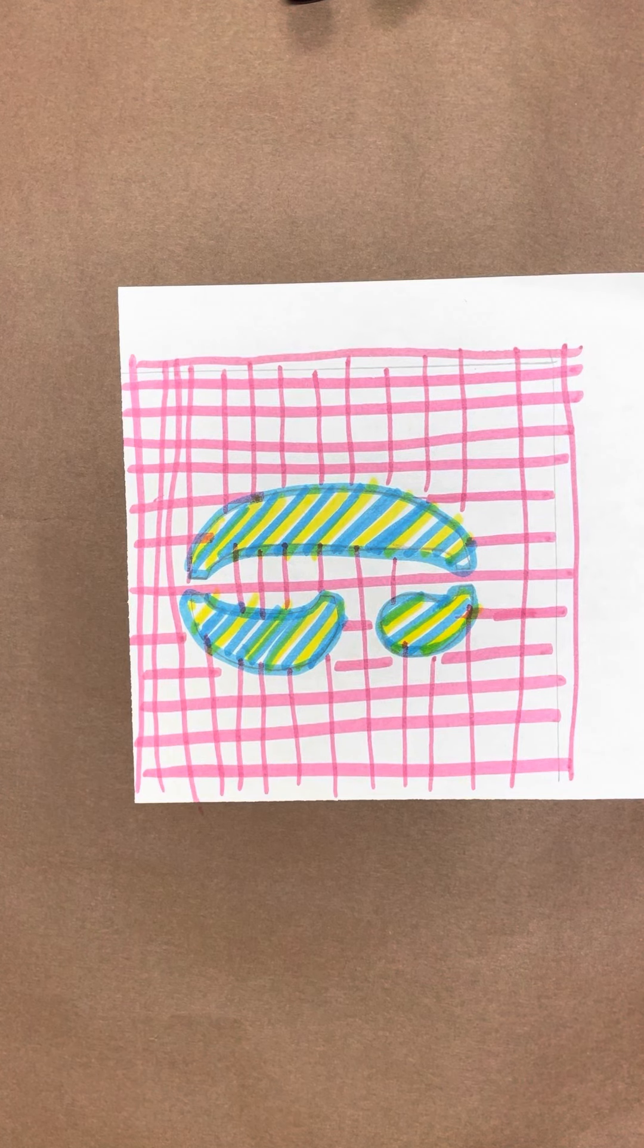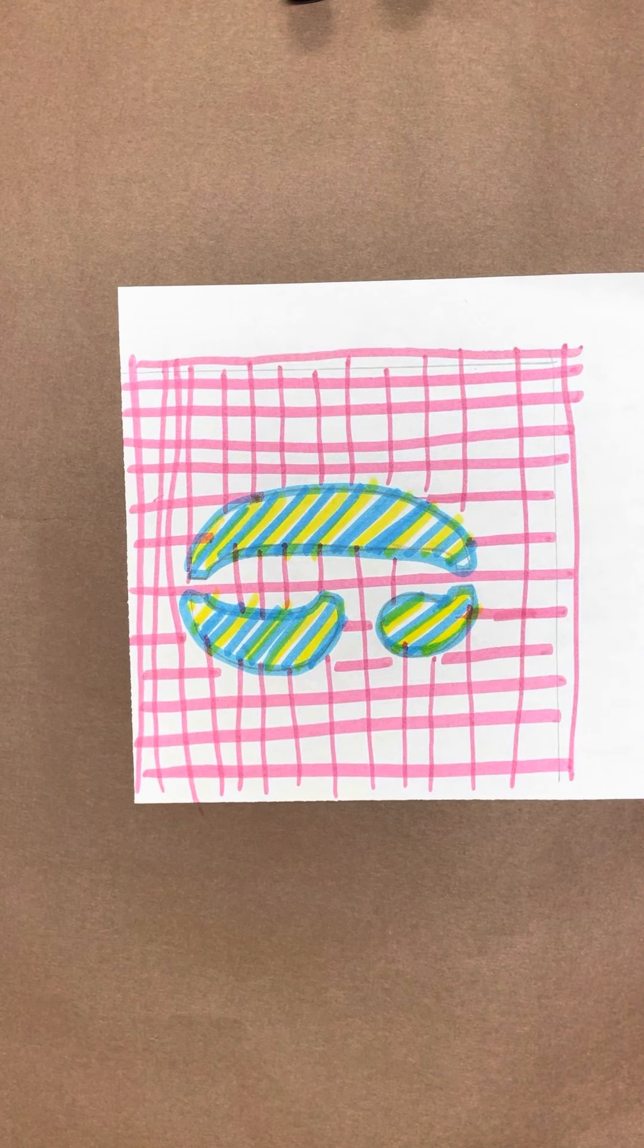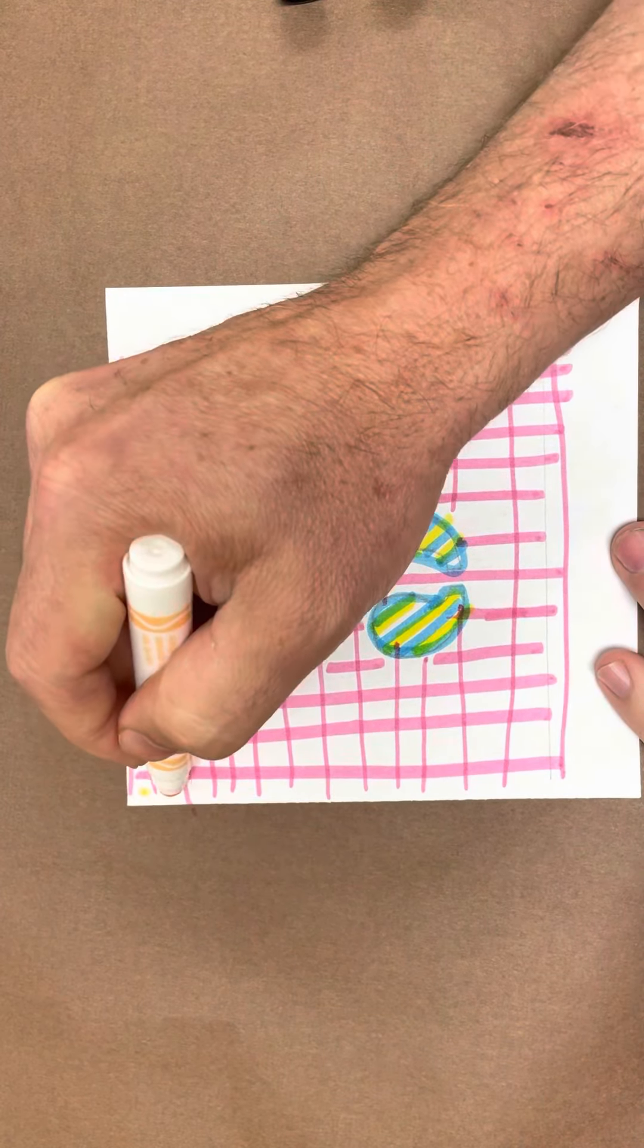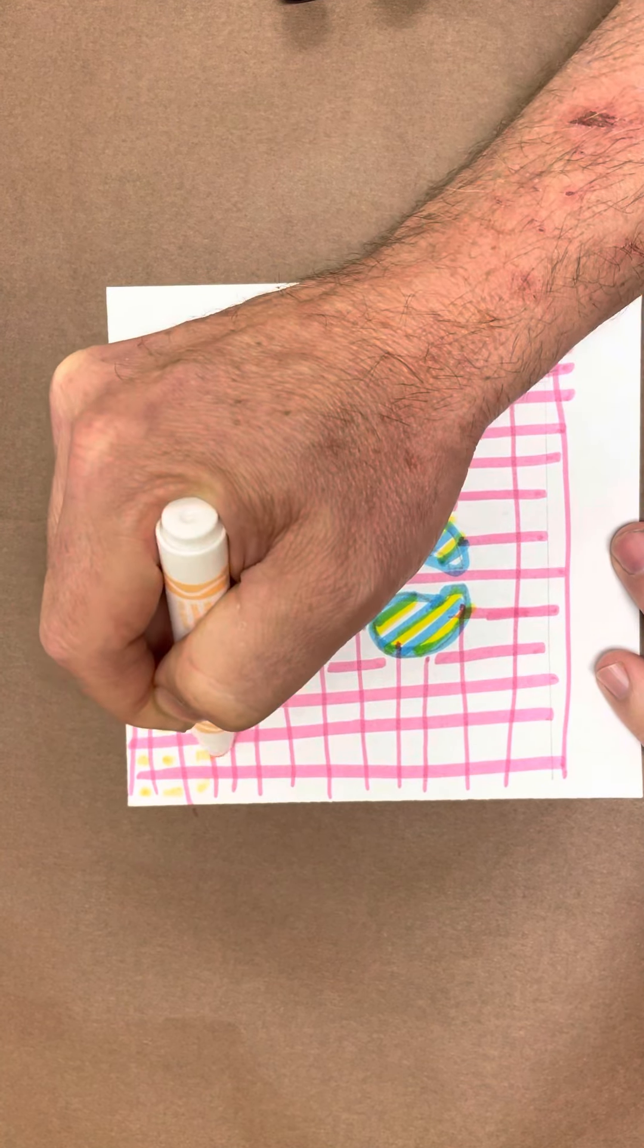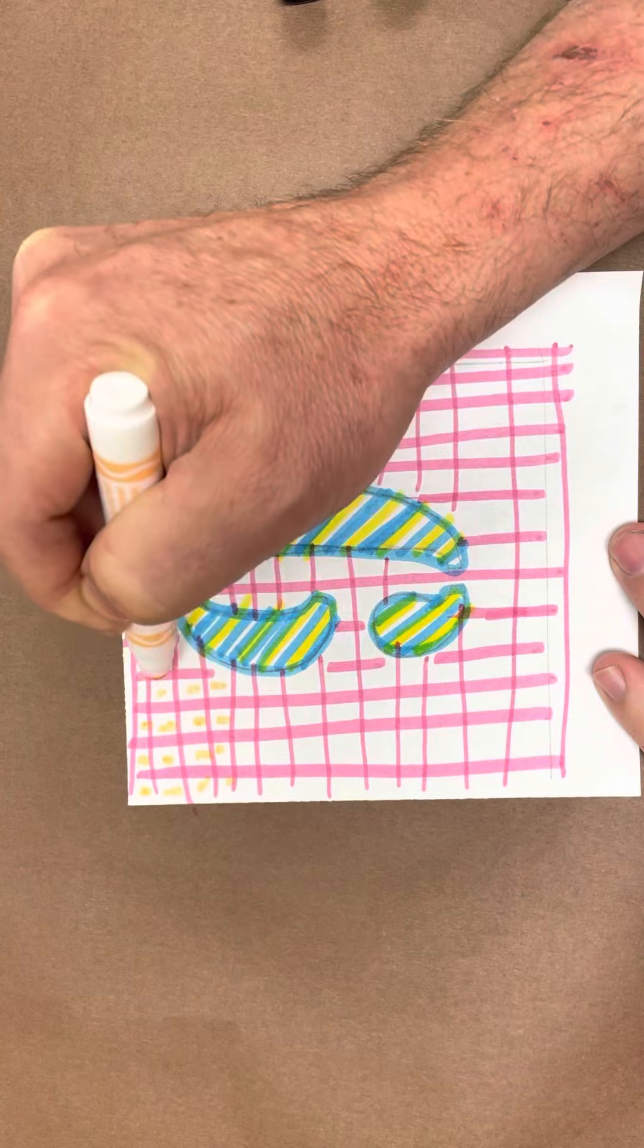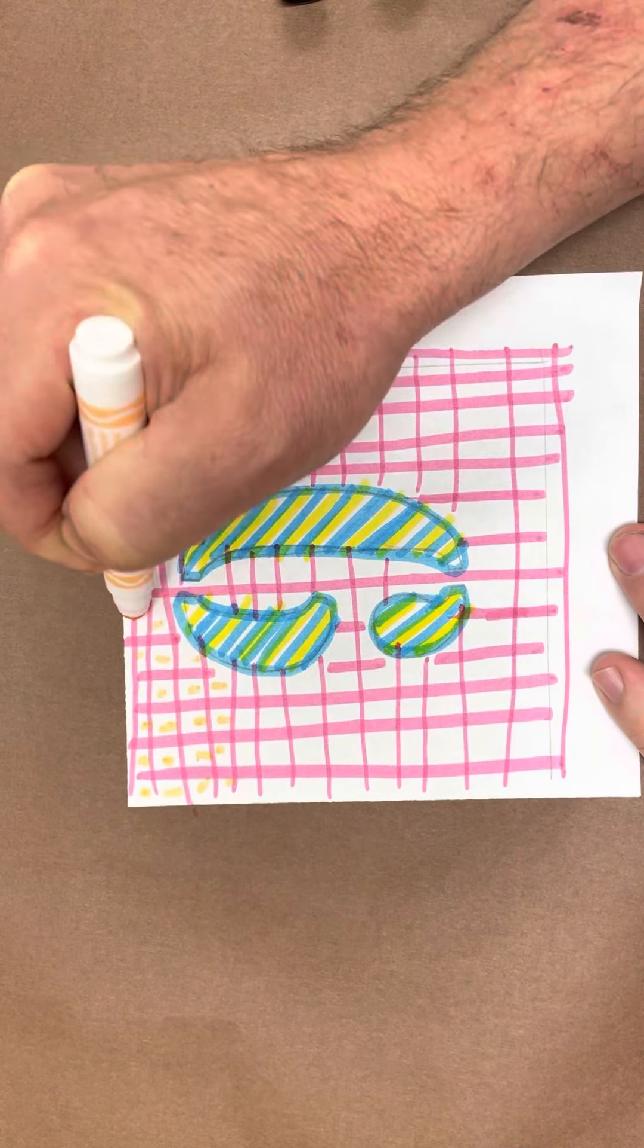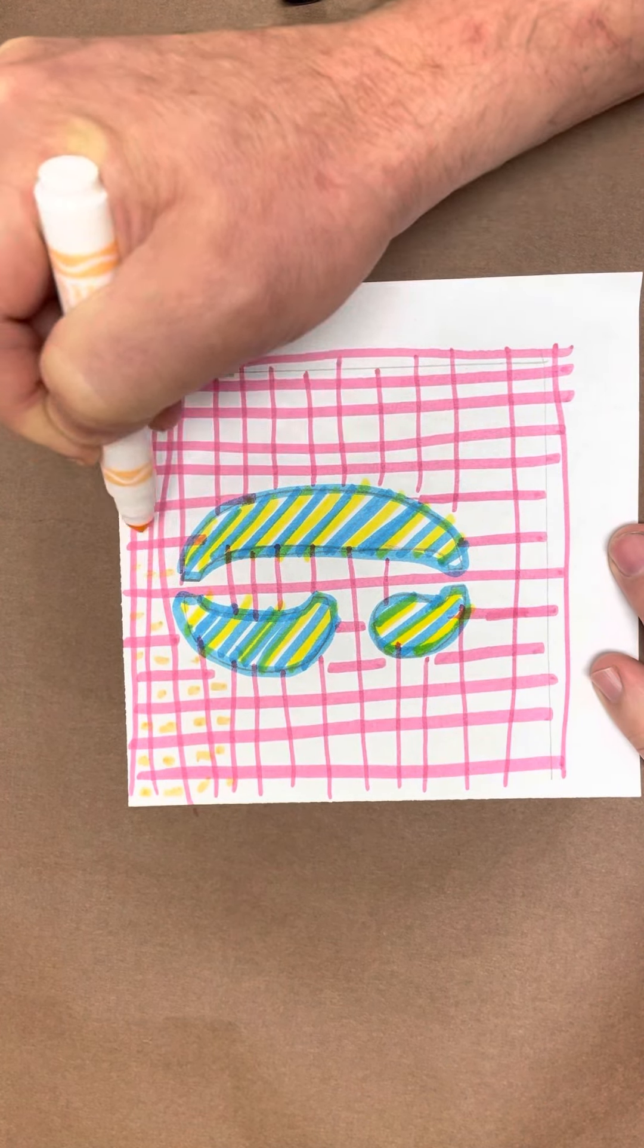Now I'm going to pick whatever colors I want to go in between all this. Maybe I'll do these little dots like this all the way through. Get those patterns in.